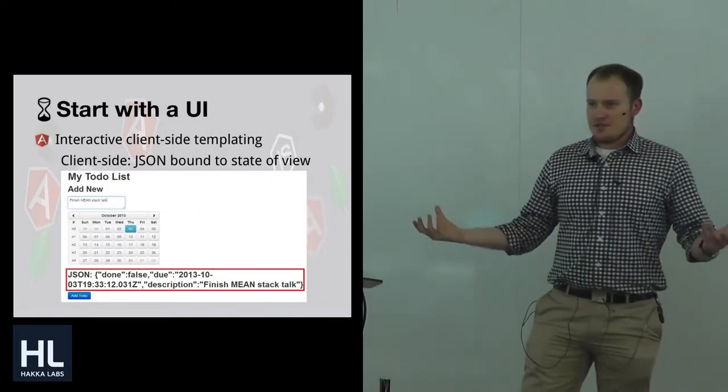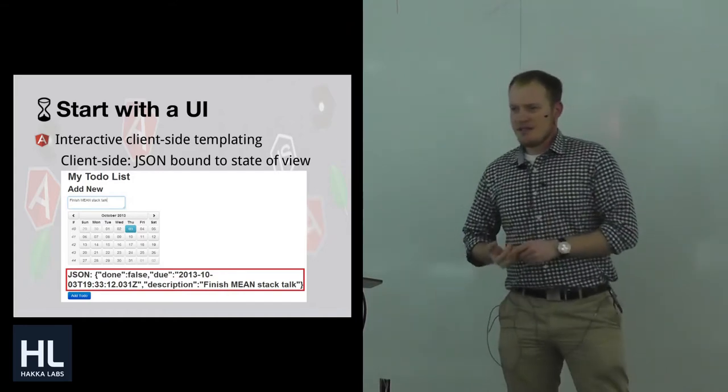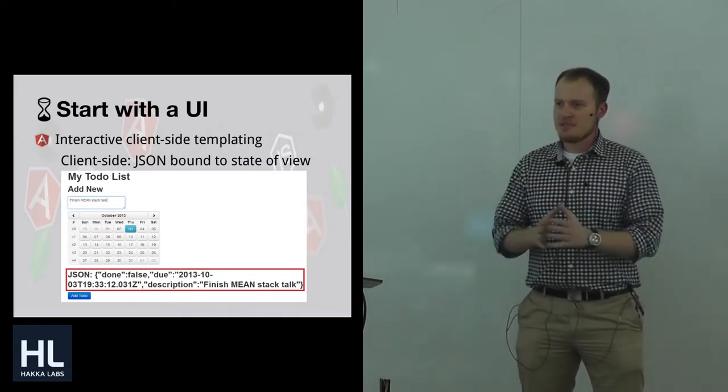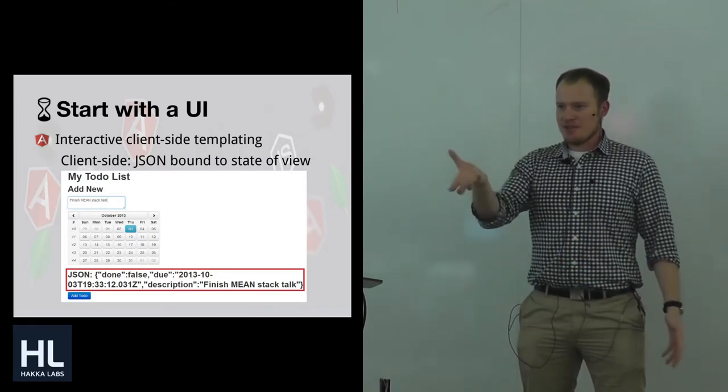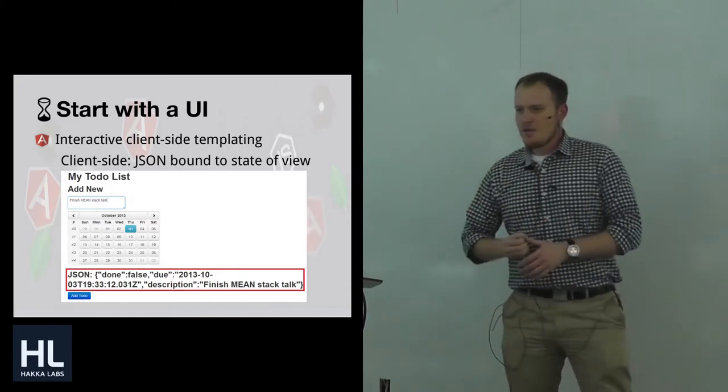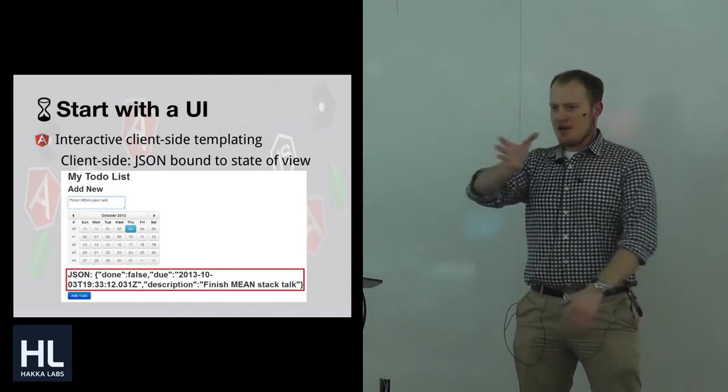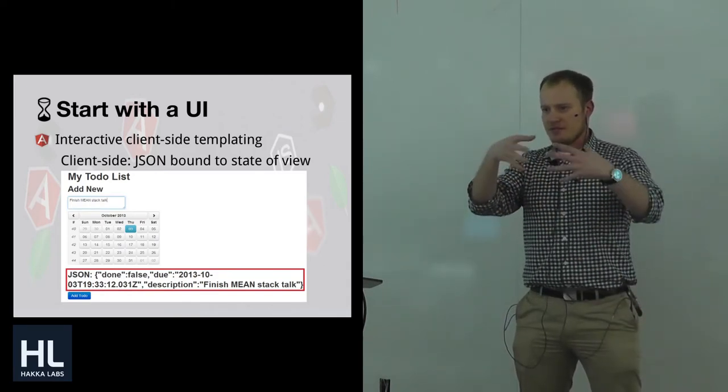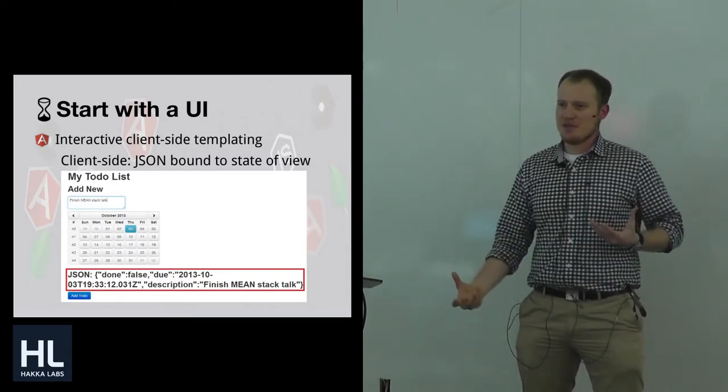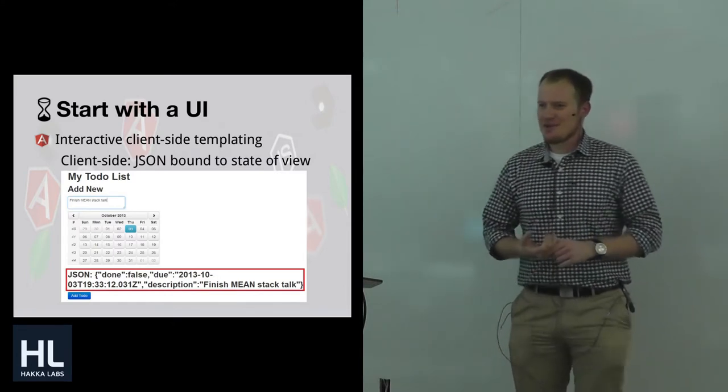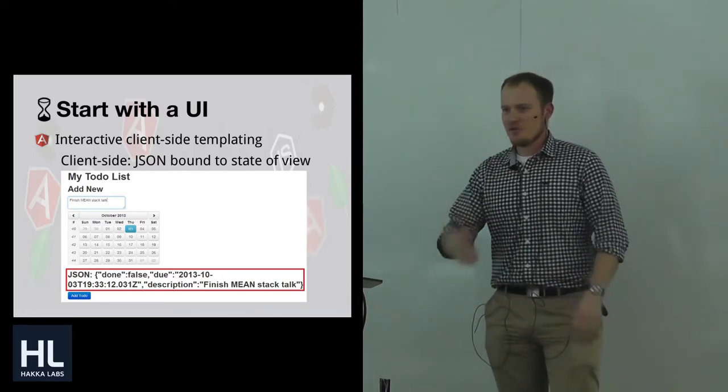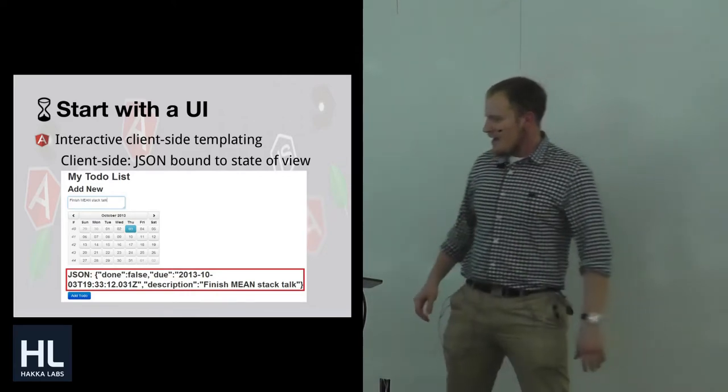A little bit deeper than that is the MEAN stack minimizes the amount of glue code that you need to glue the data coming from your database to your UI. AngularJS gives you the ability to do what I like to call an interactive client-side template. Early days templates in Rails or wherever, the server generates the HTTP response that contains HTML, the browser renders it, and then once it's shipped off doesn't really change unless there's a little bit of jQuery.